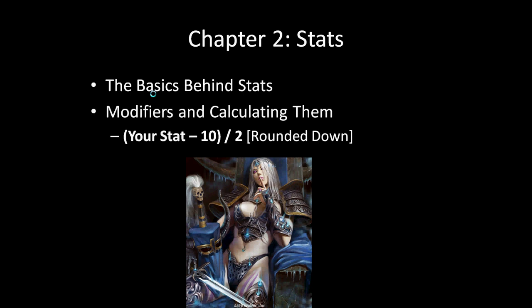Stats aren't really what matters. If you remember you saw the 14s, the 15s, the 18s — what really matters is what's called your modifier. That's what's going to affect all of your abilities and strengths. The way you calculate a modifier is you take your stat, minus 10, divide it by 2, and round it down. So someone with 17 strength: 17 minus 10 is 7, divide by 2 is 3.5, round down is 3. So 17 gives a modifier of +3.